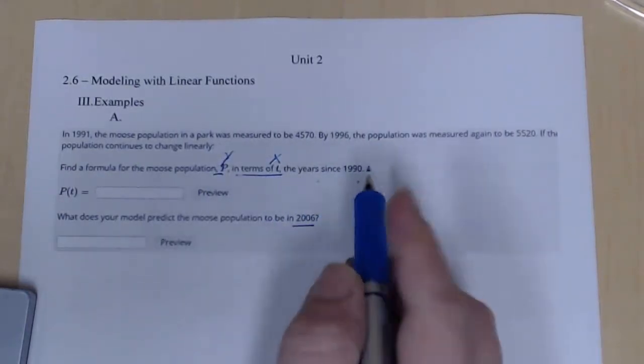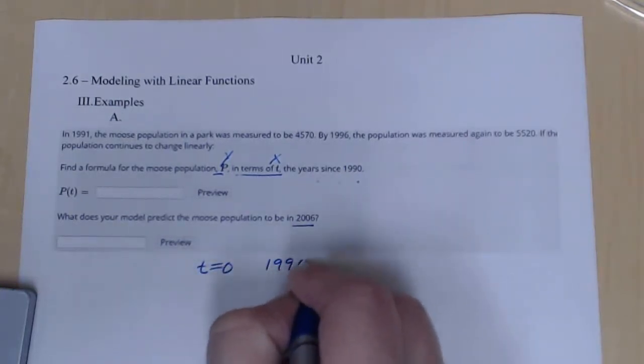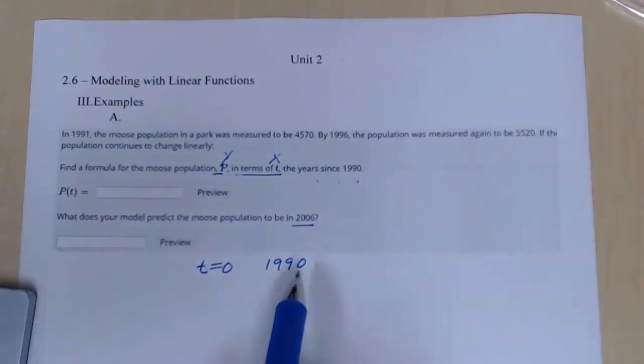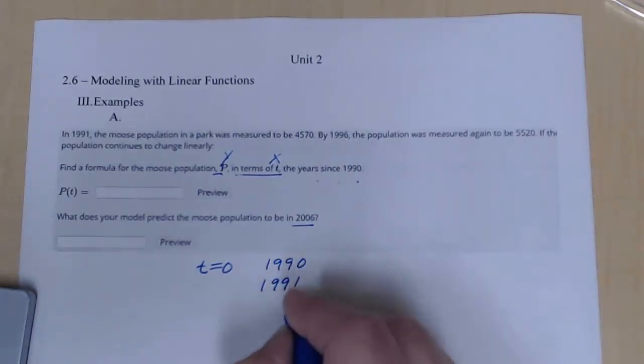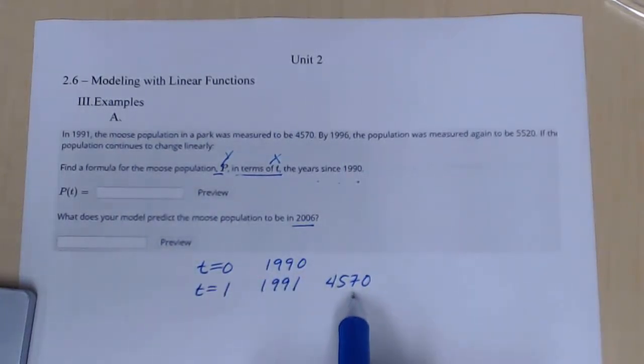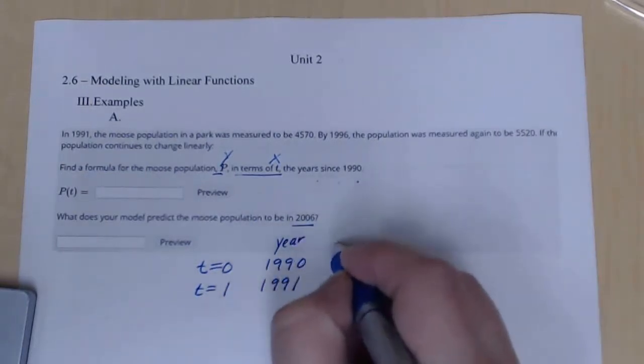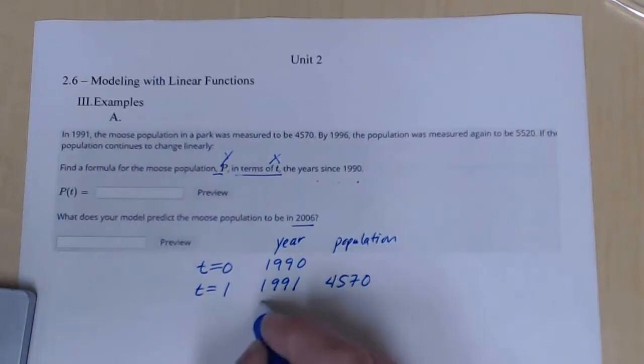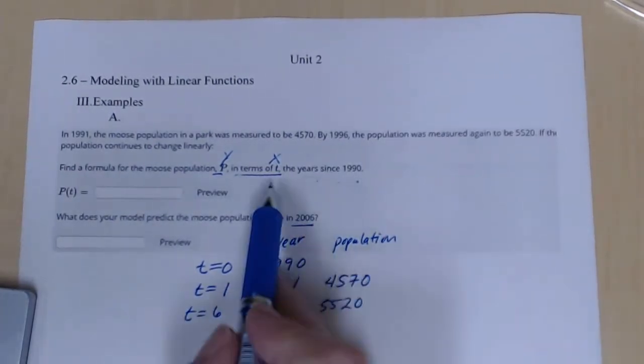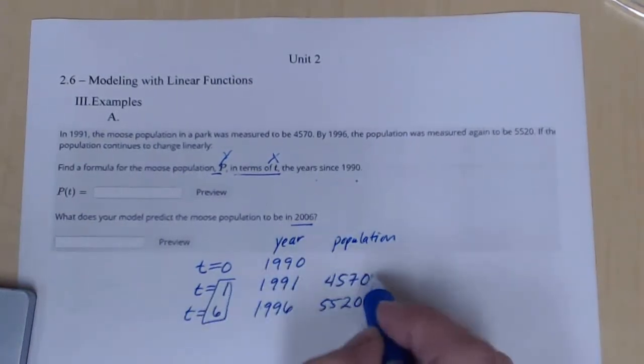The year since 1990. So that means t equals 0 at 1990. A lot of times when you're working with problems like this, you're not going to use numbers like the years. They normally slow them down and put them into numbers like 0, 1, 2, 3. So in 1991, the population was measured to be 4,570. So I'm going to use t equals 1 to represent that population. So this is the year. This is the population. By 1996, the population is measured again to be 5520. If the population continues to change linearly, find a formula. So this is going to be t equal to 6. So again, t's are my x values. So I have two x values. I have two y values.